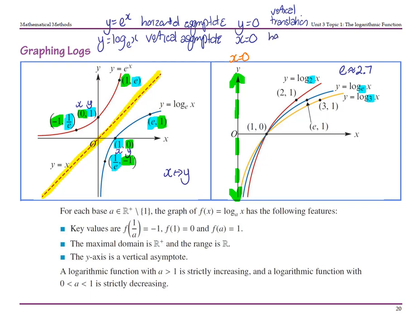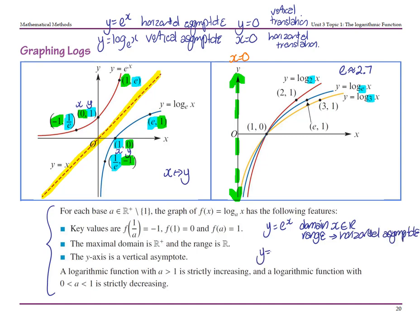Our vertical asymptote is going to be determined by our horizontal translation. Down the bottom are the characteristics, remembering that x and y's are changing because of those inverse functions. For y equals e to the x, the domain is x as an element of the reals and the range is determined by the asymptote. For y equals log base e of x, the range is now an element of the reals, but the domain is determined by the vertical asymptote.